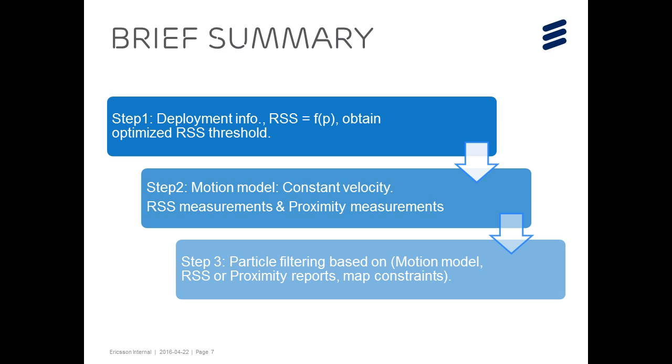And the algorithm can be summarized in three steps. In the first step, we need to know the deployment information of the building. For instance, we need to have the map of the office, we need to know the position of all the reference network nodes. In the second step, we need to assume some dynamic motion models. And also, we need to calibrate some measurement models for the received signal strength and also the proximity measurements.